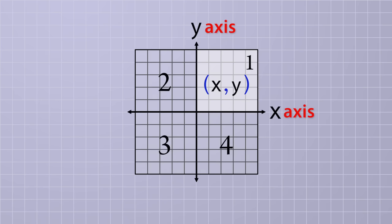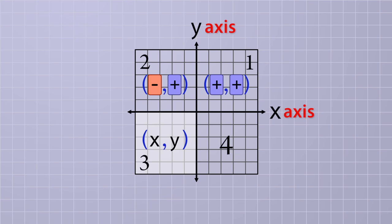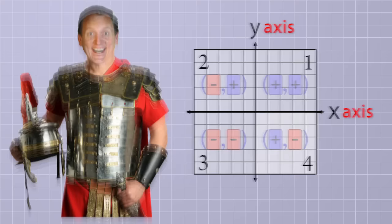Quadrant 1 is the upper-right quadrant, and it contains all of the points where both the x and y values are positive. Quadrant 2 is the upper-left, and it contains all of the points that have a negative x value and a positive y value. Quadrant 3 is the lower-left, and it contains all of the points that have both a negative x and a negative y value. And quadrant 4 is the lower-right, and it contains all of the points that have a positive x value and a negative y value.